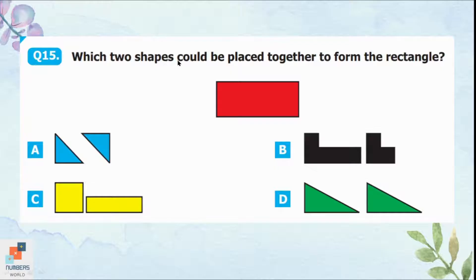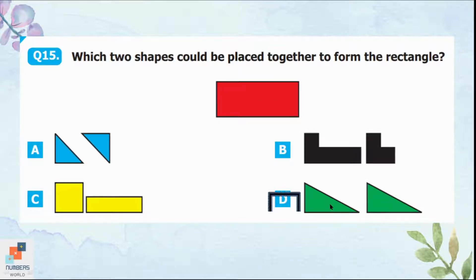Question 15: Which two shapes could be placed together to form a rectangle? Option D is the appropriate answer because if we rotate one triangle and join it with the second one, it will make a rectangle. Option D is correct.